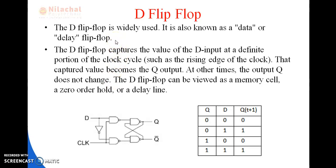D stands for delay, so it is otherwise known as delay flip-flop or data flip-flop. If we use only the middle two rows of the SR or JK flip-flop truth table, we obtain the D flip-flop. It has only one input D, which is the data input. In the truth table of D flip-flop: when D value is 0 the output is 0, and when D value is 1 the output is 1.